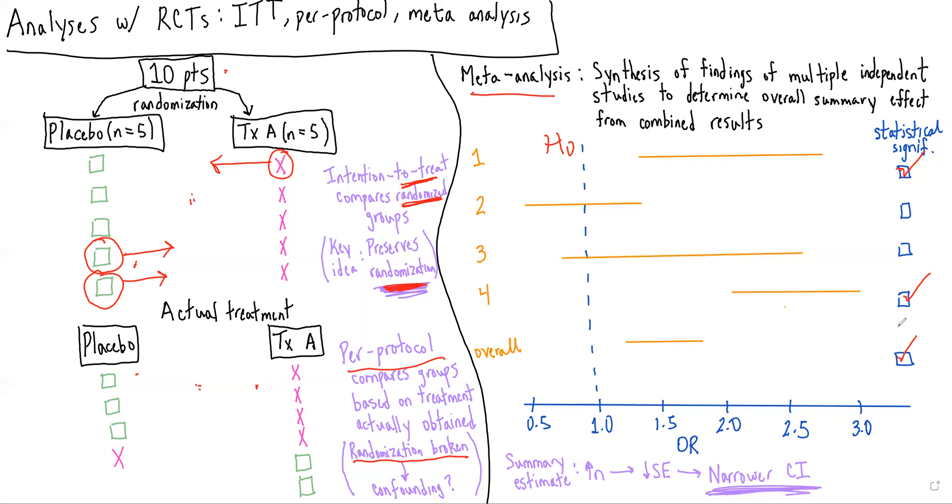And something that you'll really note and will really highlight the benefits of meta-analysis is that the 95% confidence interval of the overall summary statistic is much more narrow than the confidence interval of the independent studies.